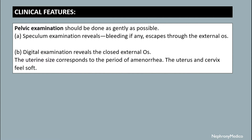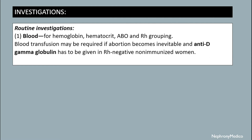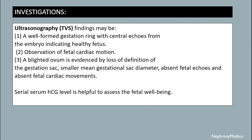The uterus and cervix feel soft. Routine investigations include blood for hemoglobin, hematocrit, ABO and Rh grouping. Blood transfusion may be required if abortion becomes inevitable. Anti-D gamma globulin has to be given in Rh-negative non-immunized women.